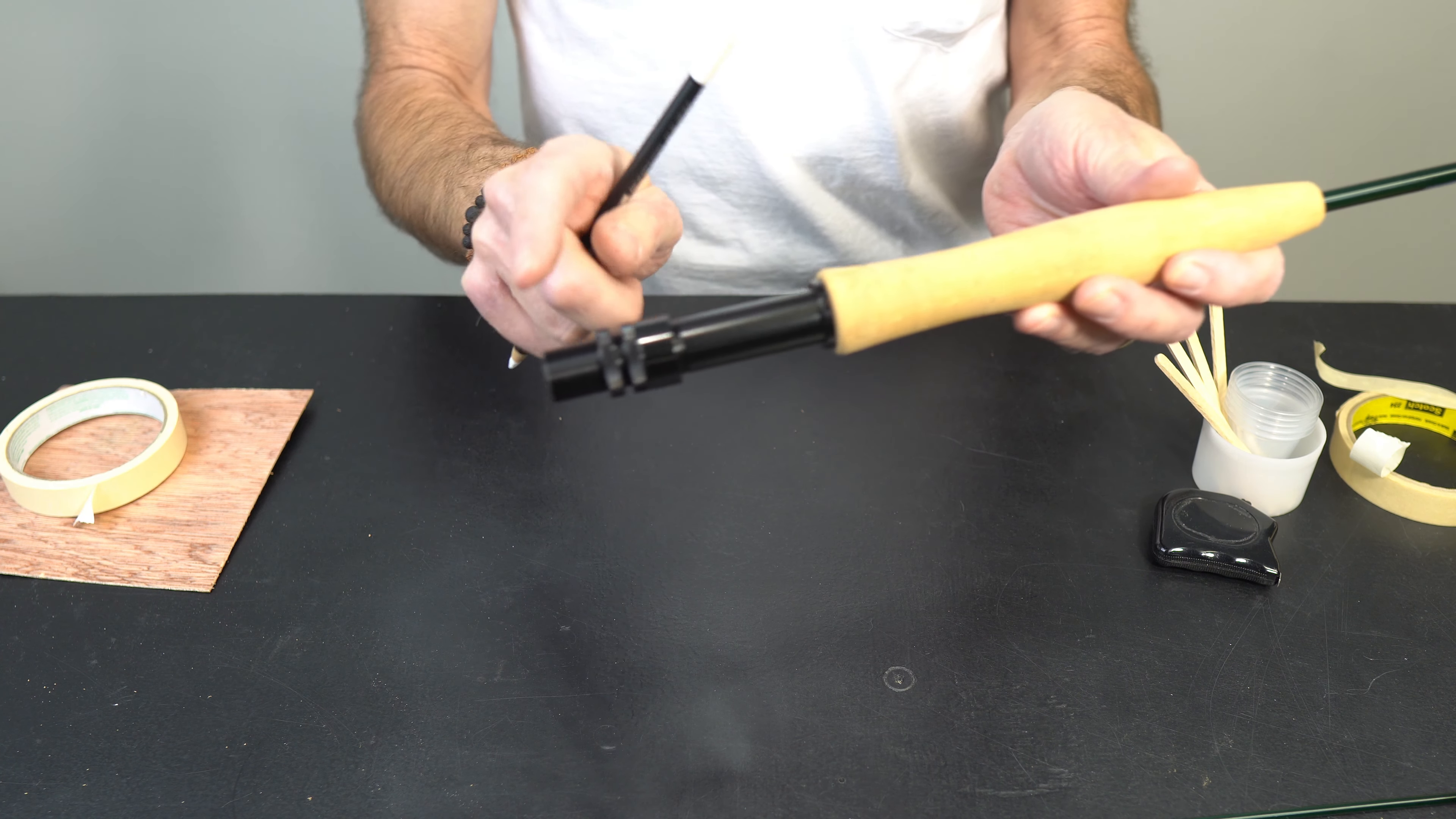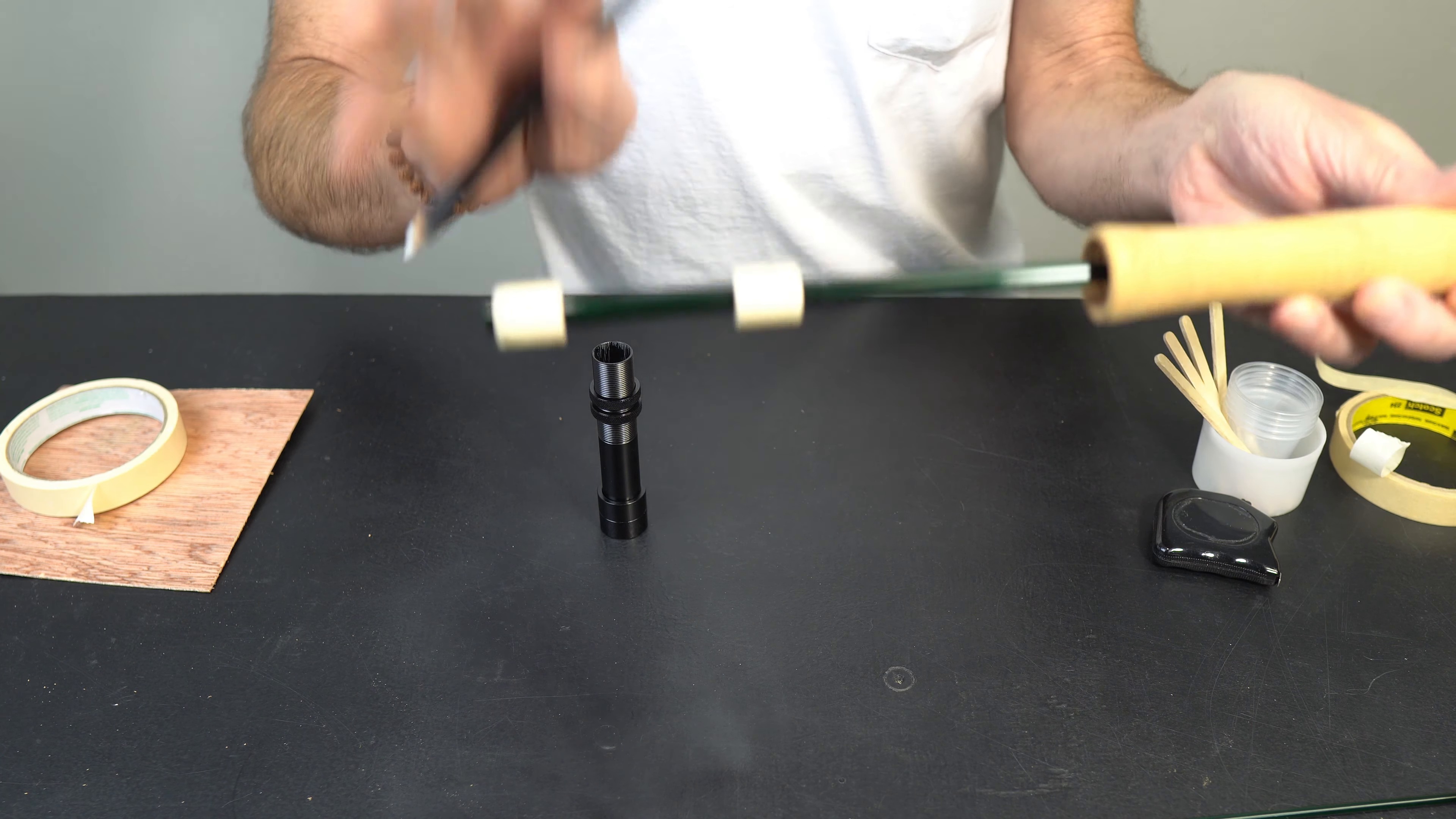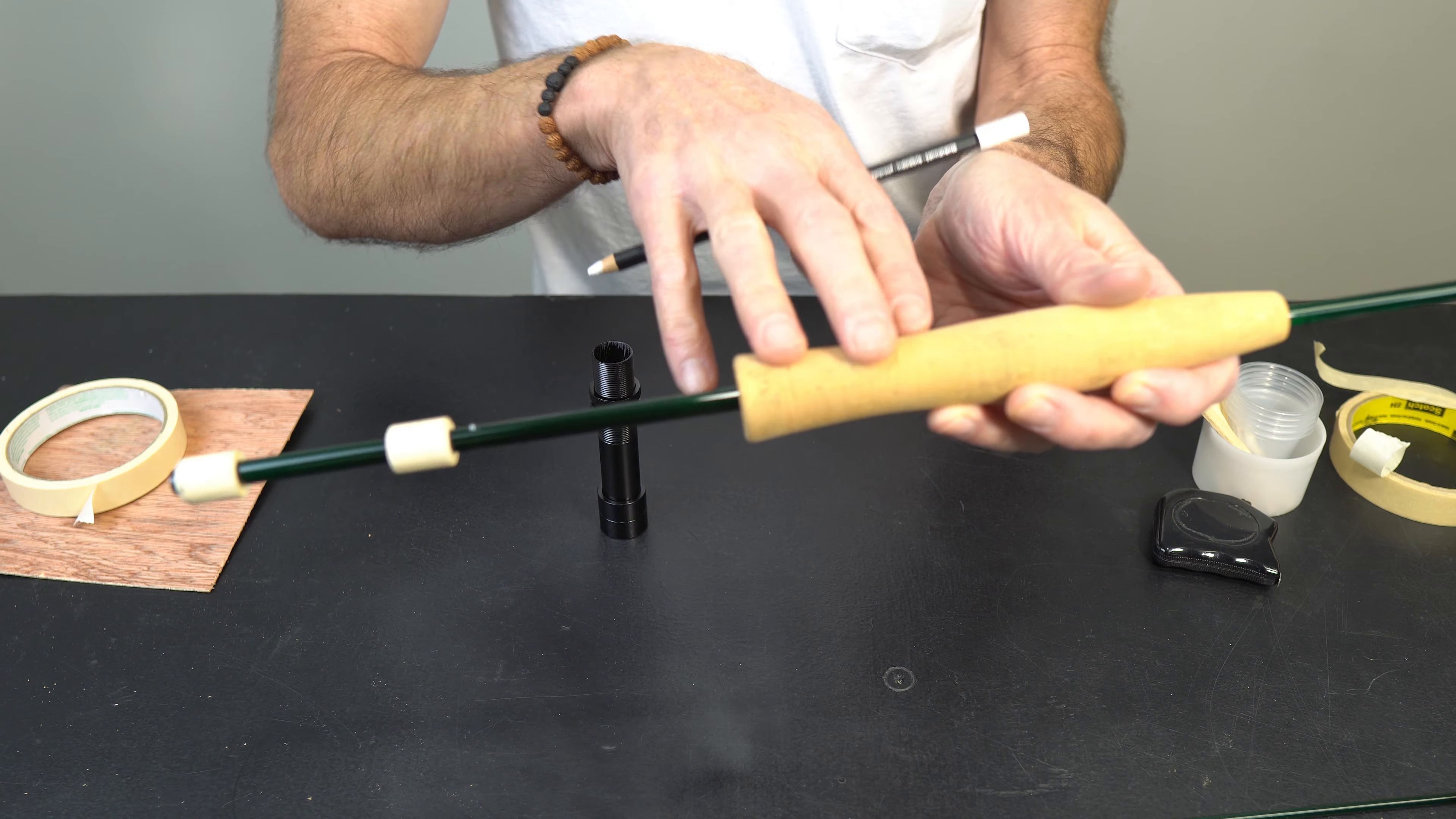We need to remember we need to be below that line for applying our adhesive on this part of the blank and then below that other mark we put for adhesive here. So step by step, first step is gluing on the reel seat. Next step right after it is going to be putting on our grip.